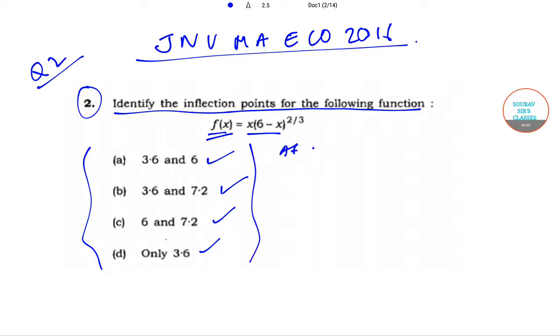At inflection point, we know that f'(x) = 0. So we have been given that f(x) = x(6-x)^(2/3).